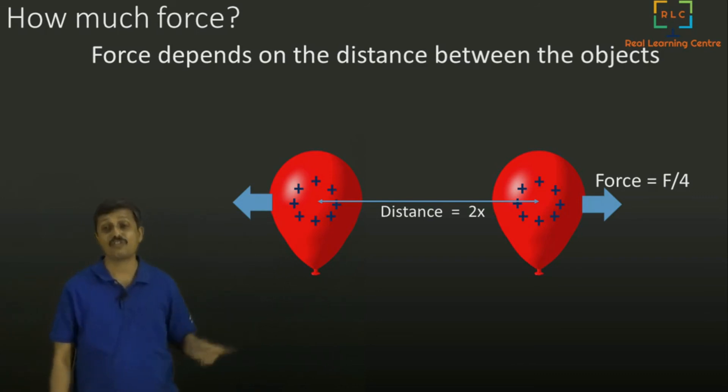So if we make the distance triple, then the force will become f by 9, one ninth of the force. That is by experiment. You can figure that out.